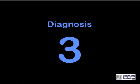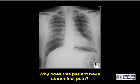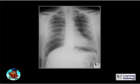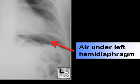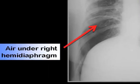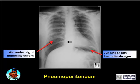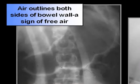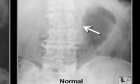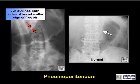This is Diagnosis 3. Why does this patient have abdominal pain? There is a pneumoperitoneum present. There is a large amount of free air beneath the left hemidiaphragm, but that can be confused with air inside the stomach or splenic flexure. However, there is also a large amount of air beneath the right hemidiaphragm, confirming free air. Another sign — Rigler's sign — shows both sides of the stomach outlined by air so the stomach wall becomes visible. Normally only the inner wall is outlined because there is no air in the peritoneal space.